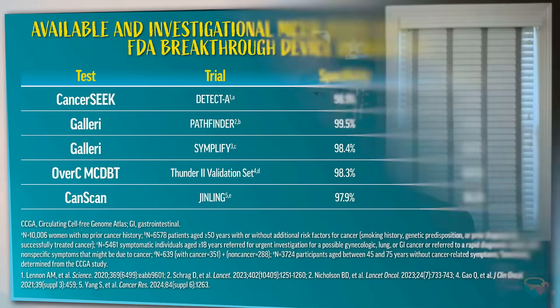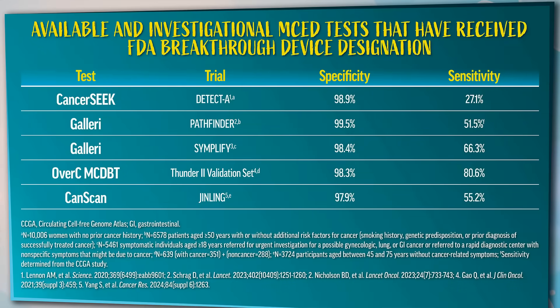Let's now discuss the clinical trial data demonstrating the high specificity and sensitivity of the available and investigational MCED tests that have received FDA breakthrough device designation. As you can see, these tests have high aggregate sensitivity, but the key thing is that they have high specificity. High specificity is important because it minimizes false positives, thereby reducing the diagnostic odyssey of unnecessary tests and workup, and helps avoid over-diagnosis or over-treatment.